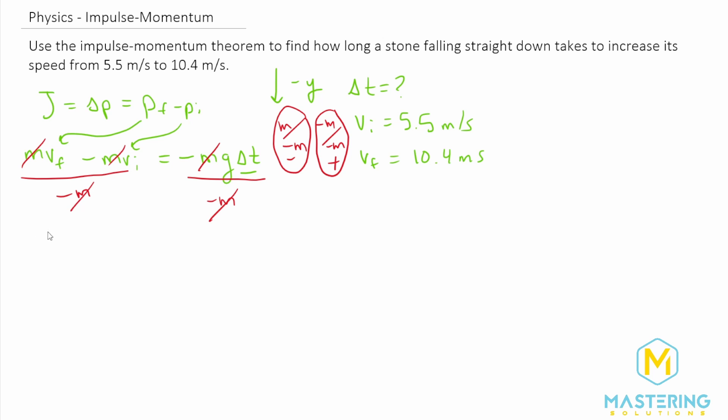And then what we're left with is a positive initial velocity minus the negative final velocity. So they flip because we're dividing by this negative mass. And all that is equal to g delta t.